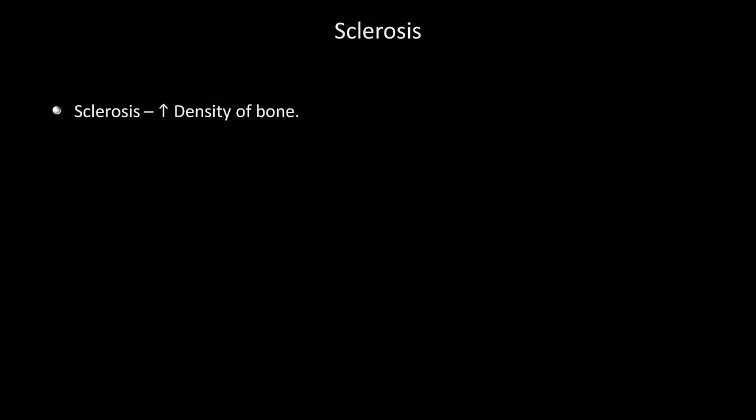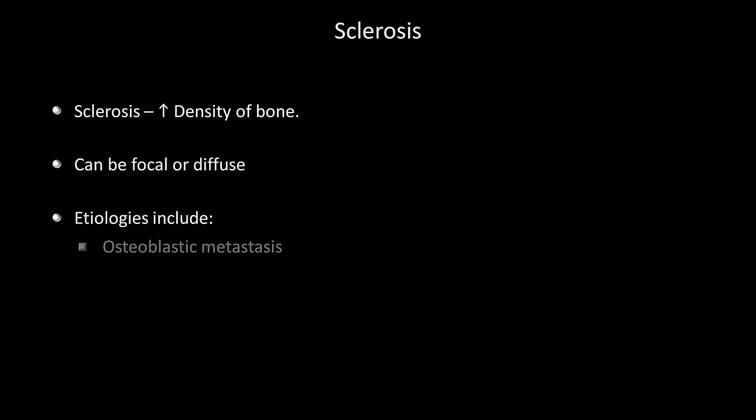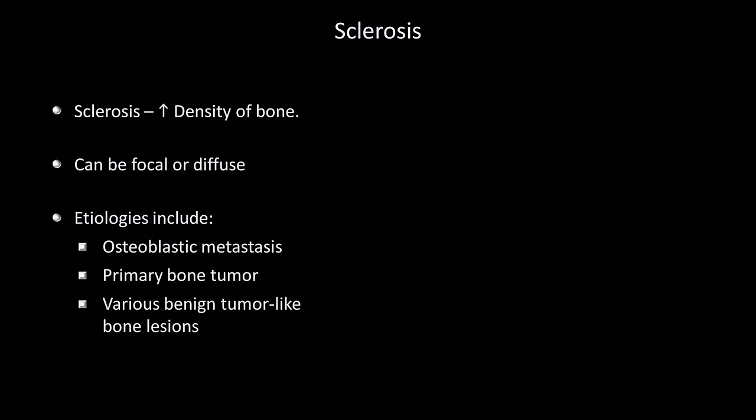Bones can be sclerosed, meaning increased density. It can be focal or diffuse, with numerous etiologies that vary greatly depending upon the age of the patient. Things to consider include osteoblastic metastasis, primary bone tumor, various benign tumor-like bone lesions, Paget's disease of bone, and chronic osteomyelitis. Sclerotic bone lesions are one time when I always consult a radiologist, because differentiating the various possible etiologies based on radiographic appearance is a very subtle art requiring radiologist-level experience.